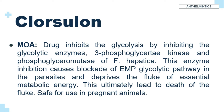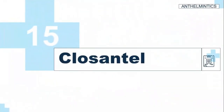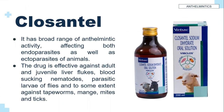This enzyme inhibition causes blockade of the EMP glycolytic pathway in the parasite and deprives the fluke of essential metabolic energy, ultimately leading to death of the flukes. It is safe for use in pregnant animals. Clorsulon has a broad range of anthelmintic activity, affecting both endoparasites and ectoparasites of animals. The drug is effective against adult and juvenile liver flukes, blood-sucking nematodes, parasitic larvae of flies, and to some extent against tapeworms, mange, mites, and ticks.